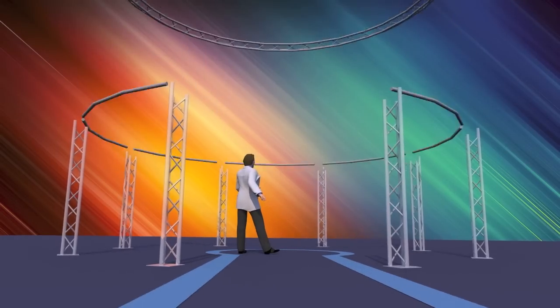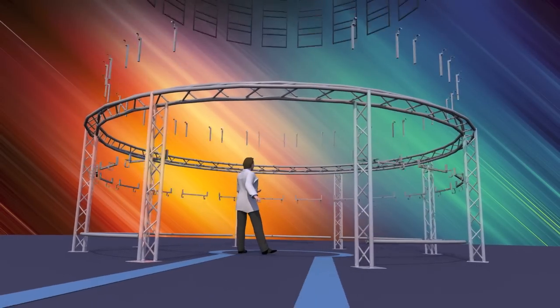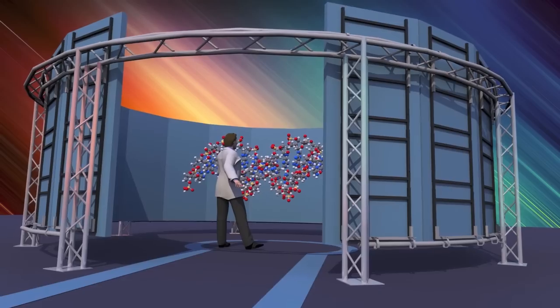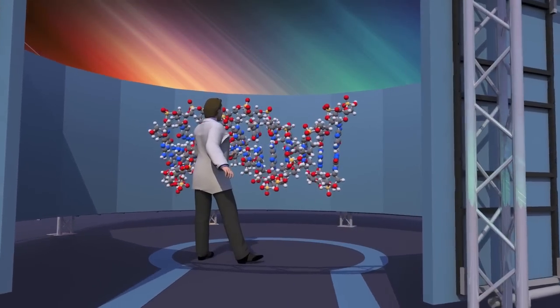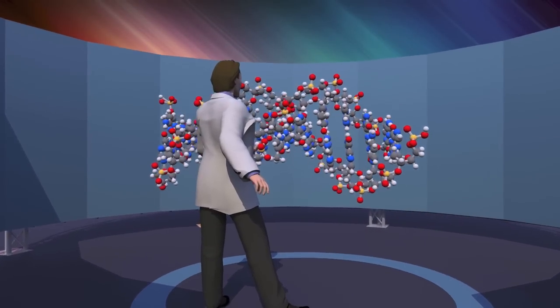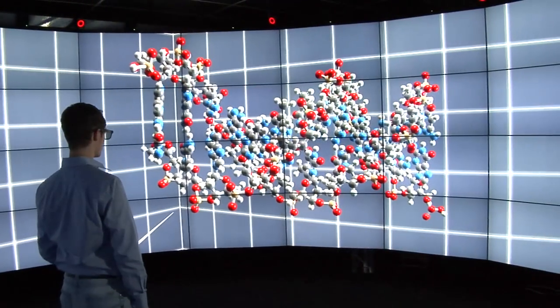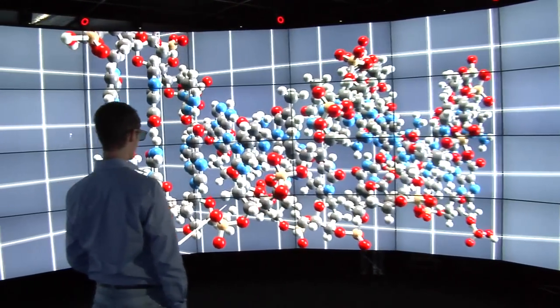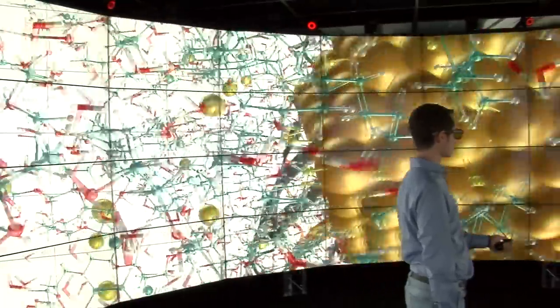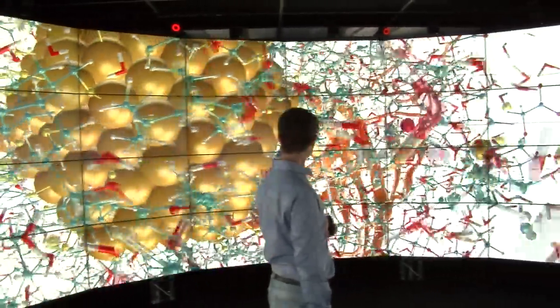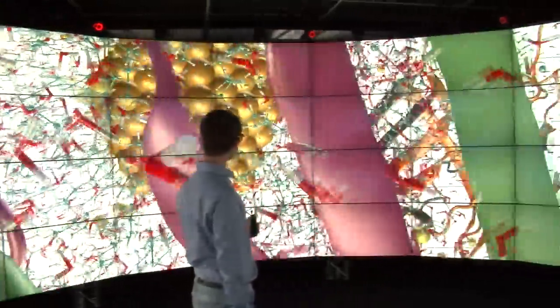The walls of CAVE 2 are built from 72 near-seamless passive stereo off-axis optimized 3D LCD panels. This provides users with a 320 degree panoramic environment for displaying information at 37 megapixels in 3D or 74 megapixels in 2D with the horizontal visual acuity of 20-20, almost 10 times the 3D resolution of the original CAVE that we invented in 1992.